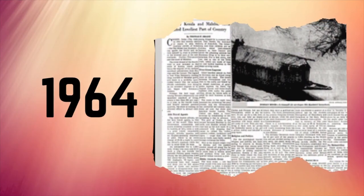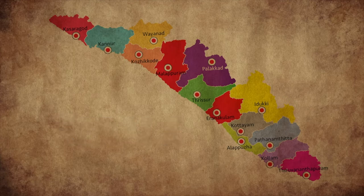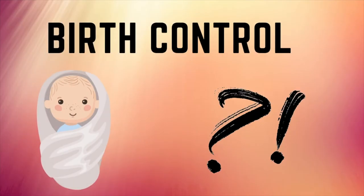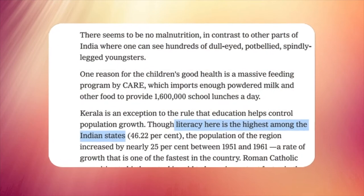In 1964, an article appeared in the New York Times about an Indian state, Kerala. It wrote about how Kerala at that time was struggling to lower its birth rate, despite having the highest literacy among the Indian states.